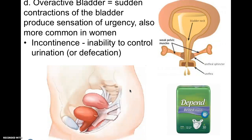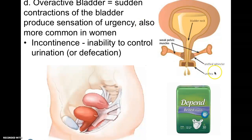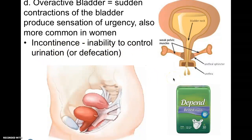Overactive bladder happens to a lot of people with age, but is more common in women due to labor and delivery — you have to push so hard to get the baby out that the sphincter gets loosened. You may laugh or sneeze and fluid will come out. Incontinence is the inability to control urination. Kegel exercises are something females can do to help strengthen those muscles.